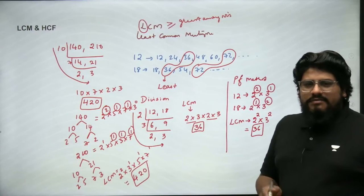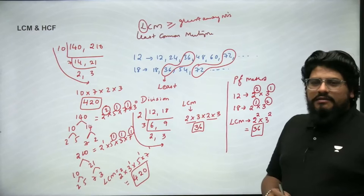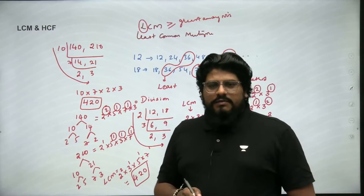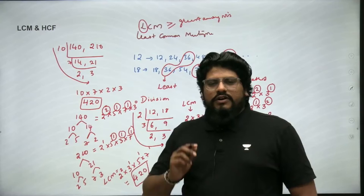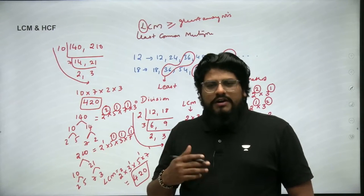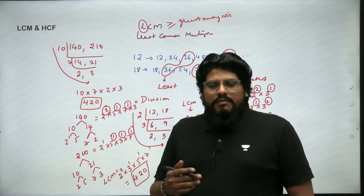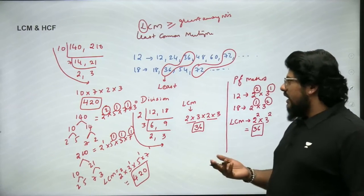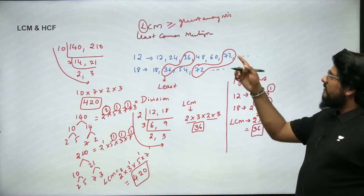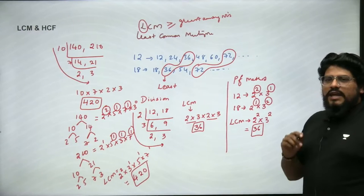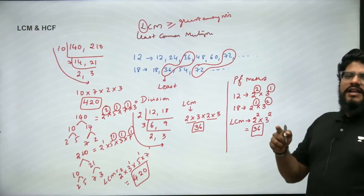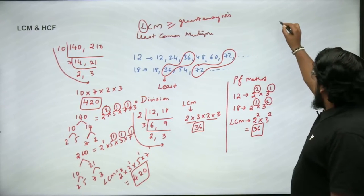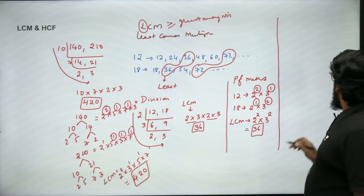So that's how we find LCM using the division method and the prime factorization method. Remember, to find the least common multiple you look for a number that is a common multiple of both numbers. LCM will always be greater than or equal to the greatest of the given numbers.